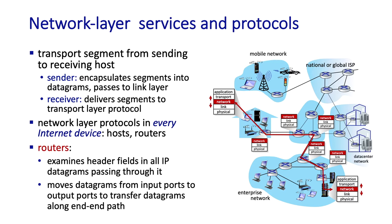That's a pretty simple statement, but think about all the questions it raises. There's a local issue: how does the router know which is the appropriate outgoing link for an arriving datagram?